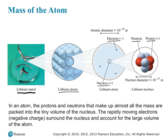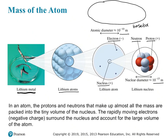The diameter of an atom is about 10 to the negative tenth meters — really, really small. The diameter of a nucleus is even smaller, at 10 to the negative fifteenth meters. One way to picture this: imagine a baseball stadium is the size of an atom. The nucleus would be a little baseball sitting right in the middle of the stadium. That's how small the nucleus is compared to the atom.